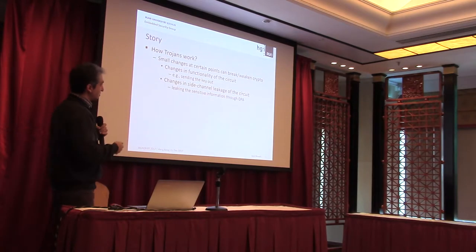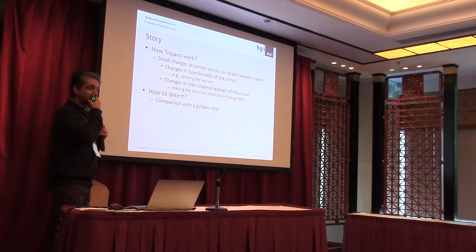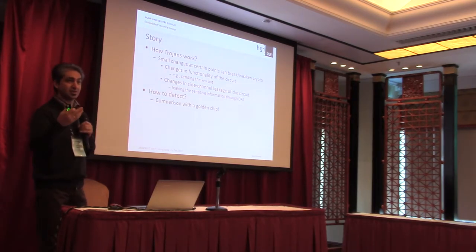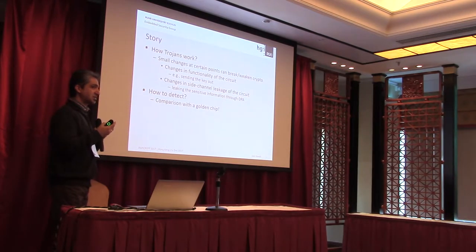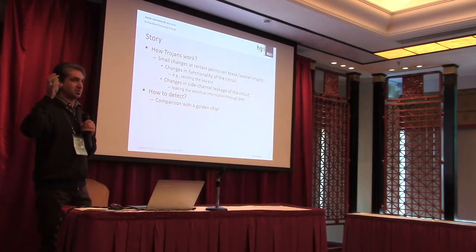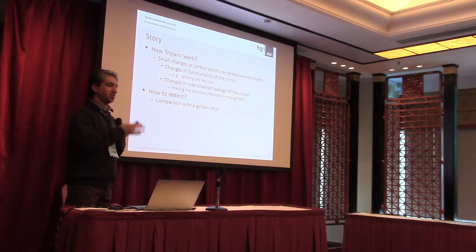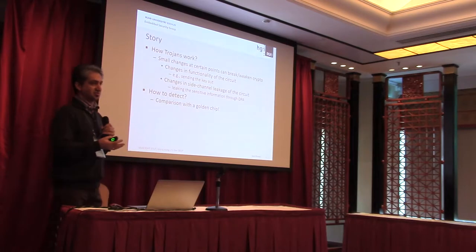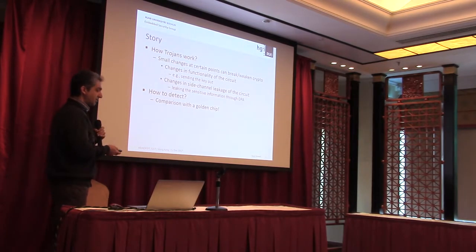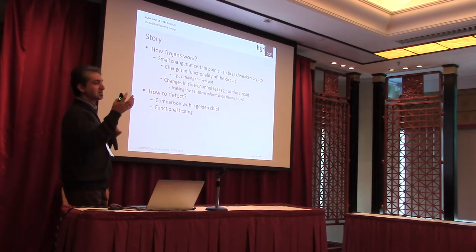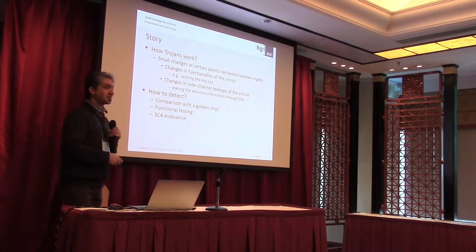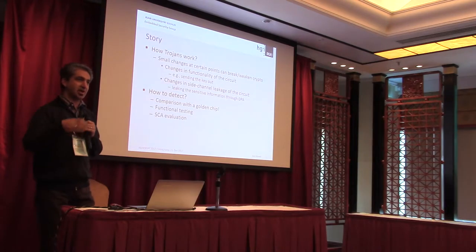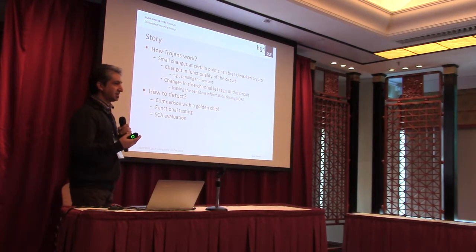How do we detect such Trojans through functionality testing or side-channel evaluation? What is usually considered in the hardware Trojan community is comparing the chip with a golden chip — a strong assumption that you have a potentially Trojan-infected chip and also a golden chip that you are definitely sure has no Trojan, then you compare the characteristics of these two devices. Sometimes it's hard to assume the golden chip is accessible, so you do functional testing with many test vectors to see whether the functionality is correct, or you do side-channel evaluations using state-of-the-art leakage detection schemes.